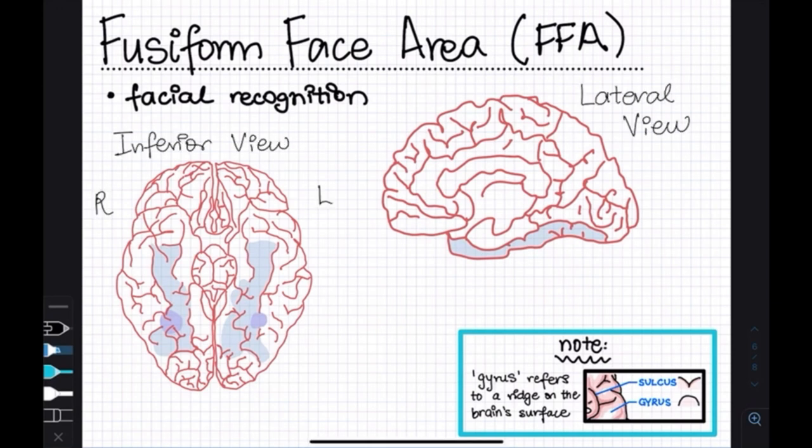The fusiform face area is located in the fusiform gyrus, which is a part of the temporal lobe. The fusiform gyrus is located on the ventral surface of the brain in the inferior temporal cortex.